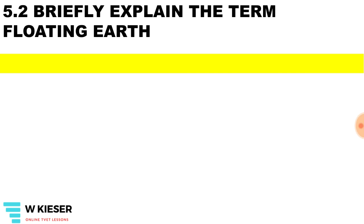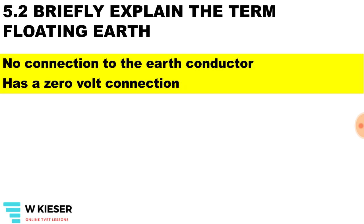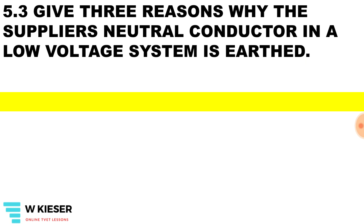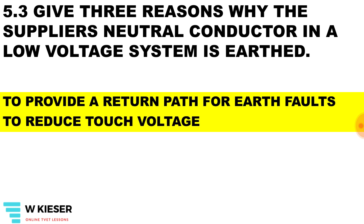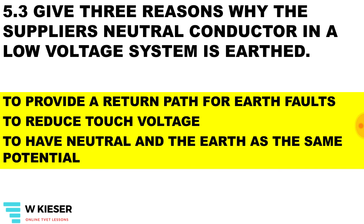What do we mean by the term floating earth? It has a zero-volt connection and there is no connection to the earth continuity conductor. Give three reasons why the supply neutral conductor in a low voltage system is earthed. It is to provide a return path for earth faults, to reduce touch voltage, and to have the neutral and the earth come to the same potential.